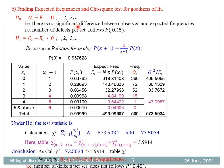H₀ is that there is no significant difference between observed and expected frequencies — that is, the number of defects per set follows Poisson distribution with parameter 0.45. H₁ is that there is a significant difference, meaning the number of defects does not follow Poisson distribution with parameter 0.45. To obtain probabilities of various values of X, we use the recurrence relation. The initial probability P(0) = e^(−0.45) = 0.637628.